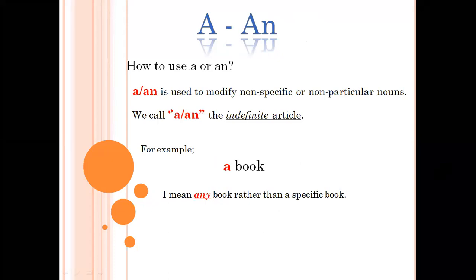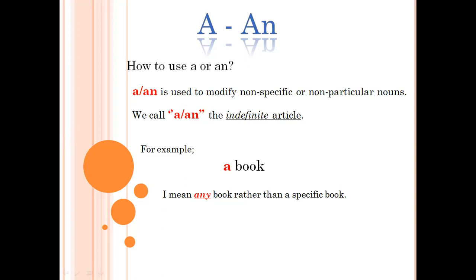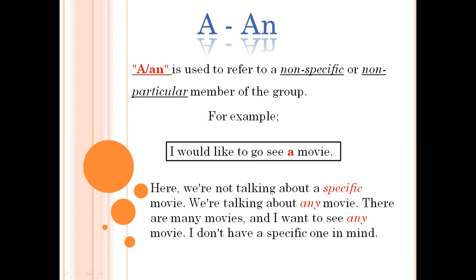How to use a or an. A and an is used to modify non-specific or non-particular nouns. We call a and an the indefinite articles. For example, a book. I mean any book rather than a specific book. A and an is used to refer to non-specific or non-particular member of the group. For example, I would like to go see a movie. Here we are not talking about a specific movie. We are talking about any movie. There are many movies and I want to see any movie. I don't have a specific one in my mind. So, for non-specific things, we are going to use a or an.